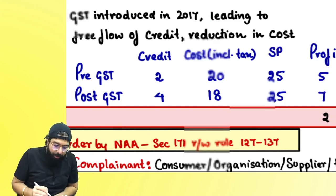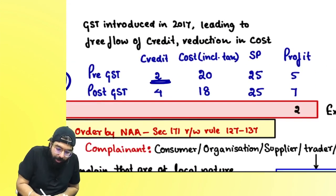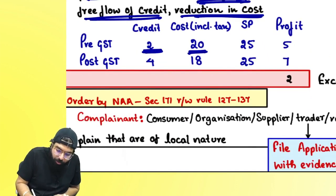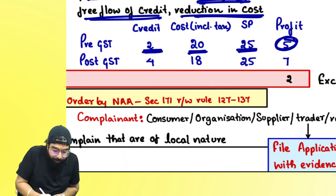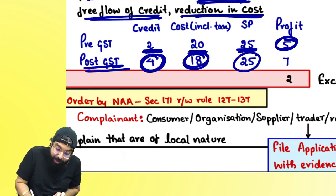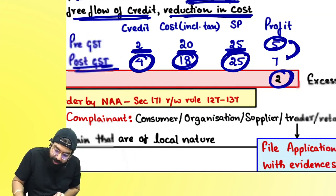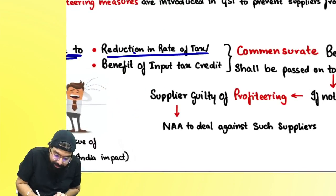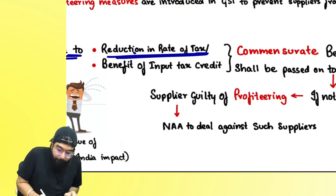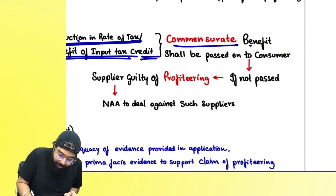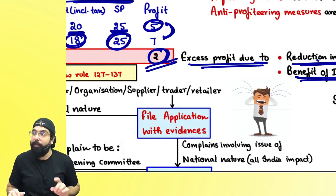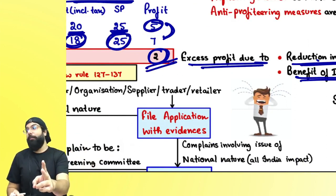Cost is coming down because of GST — the benefit also should be given to the consumer. Earlier, credit was 2 rupees, cost was 20, selling price was 25, profit was 5 rupees. With GST, free flow of credit increased, cost came down, but you're still selling at the same price — that is profiteering. Excess profit due to reduction in tax: when the government reduces the tax you should reduce your selling price and pass on the benefit. Equal benefit has to be passed on to the consumer.